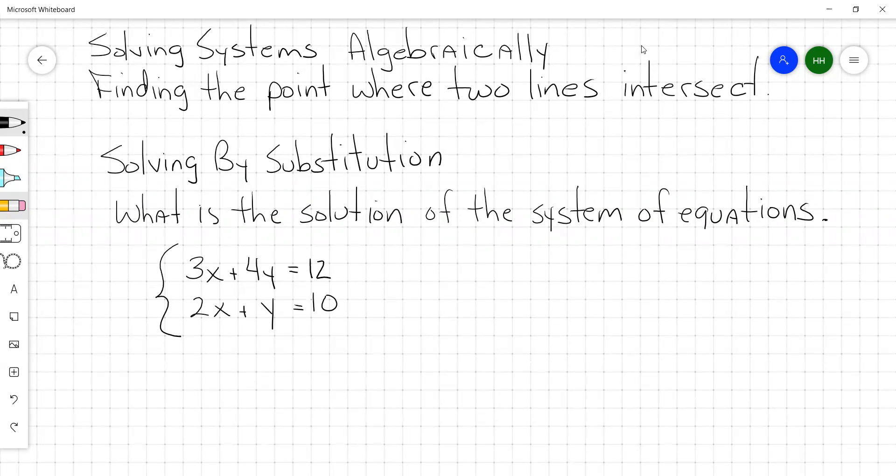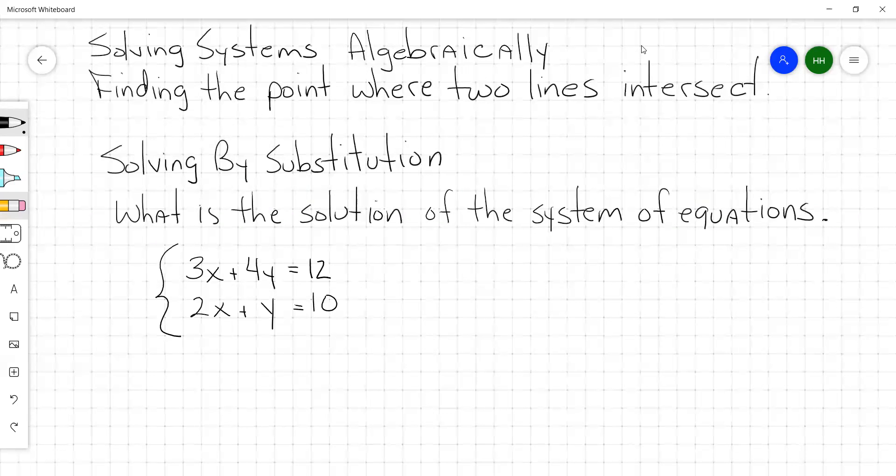Kind of a little bit of a review from yesterday, both of those equations are in standard form. So you could graph those and you could see where the two lines intersect. But sometimes the lines will intersect at a point that doesn't have whole number coordinates. And when that's the case, you can't really determine the exact x, y value where the line intersects. So you have to be able to solve a system algebraically.